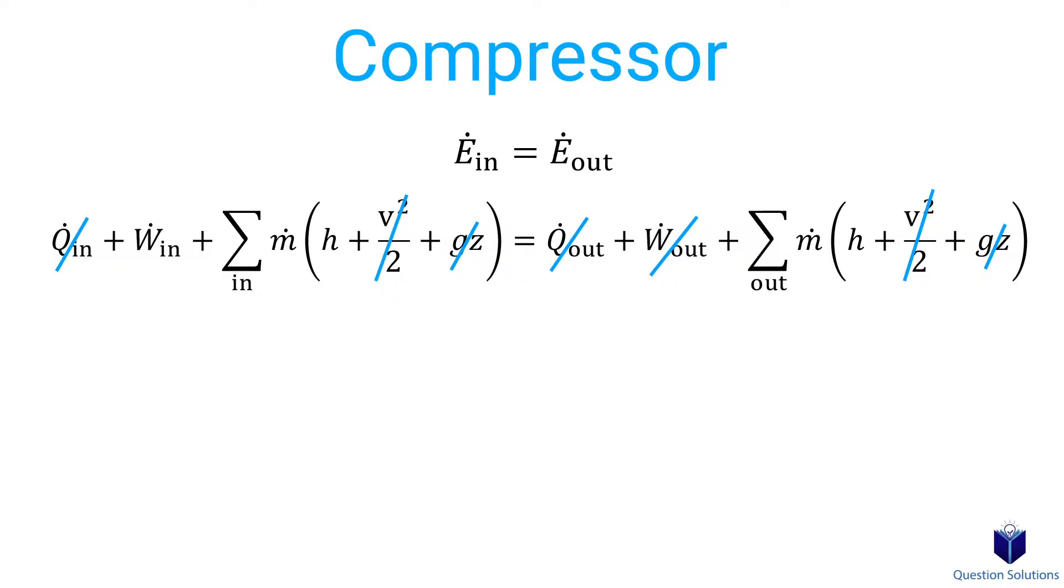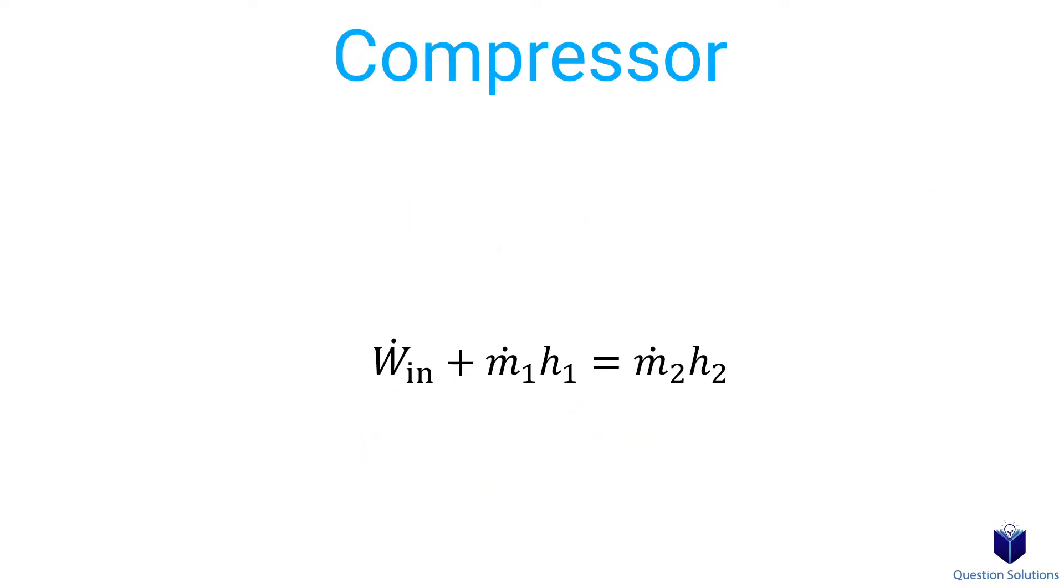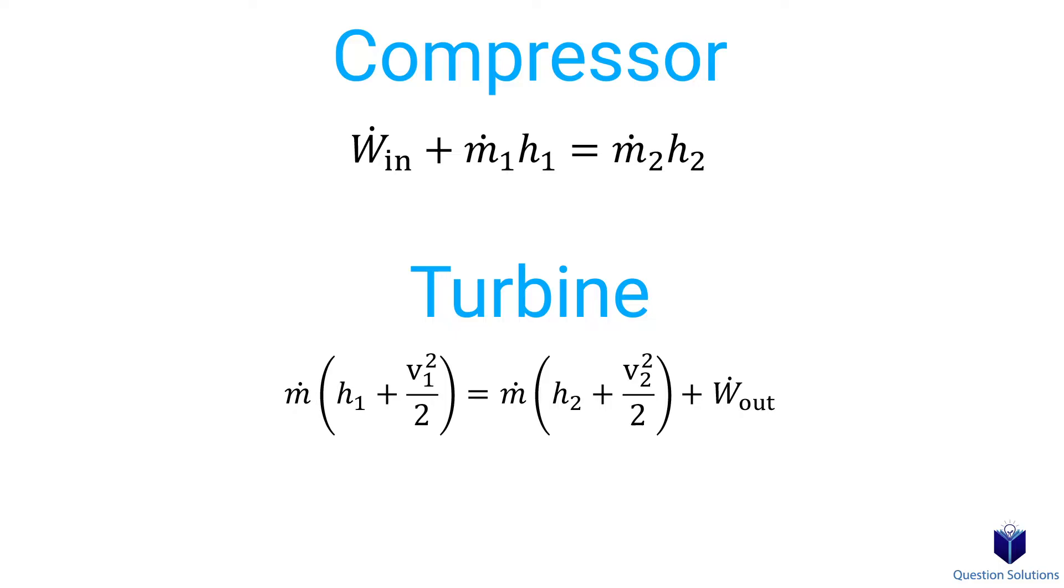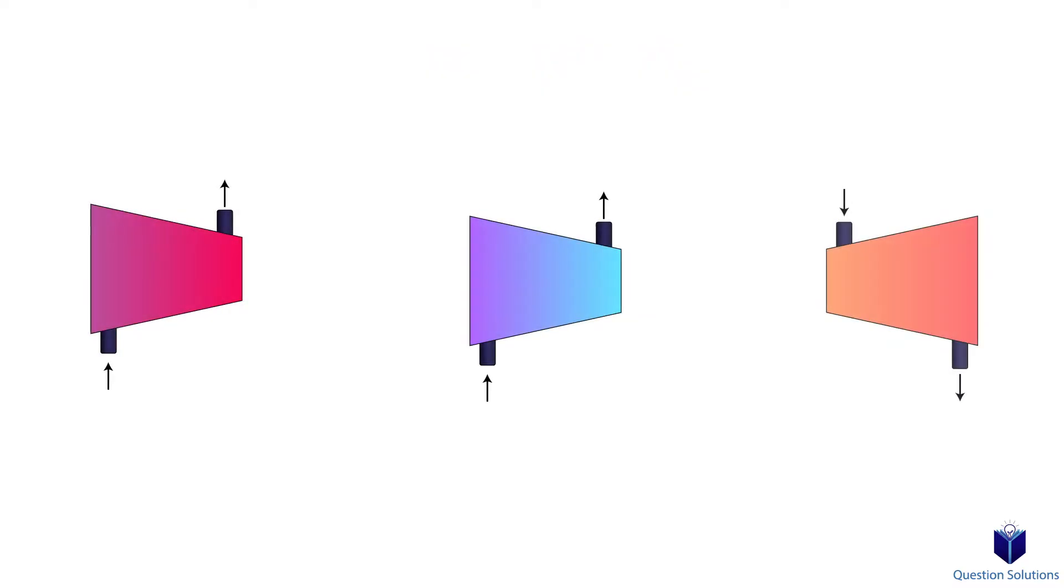So for compressors, our energy balance equation usually simplifies to this. We have mass flow, work input, and enthalpy. Notice again, how for turbines we have work output, while for compressors we have work input. Now let's move on to some examples to see how we can apply what we learned.